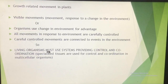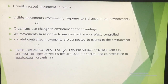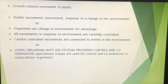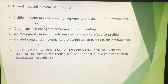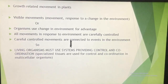All movements in living organisms are controlled and coordinated movements. There is a controlling system, and that system makes the other systems coordinate with it. When we see or think something and want to run, our nervous system controls and coordinates with the various tissues to produce movement. This is how the nervous system controls all movements in multicellular organisms.